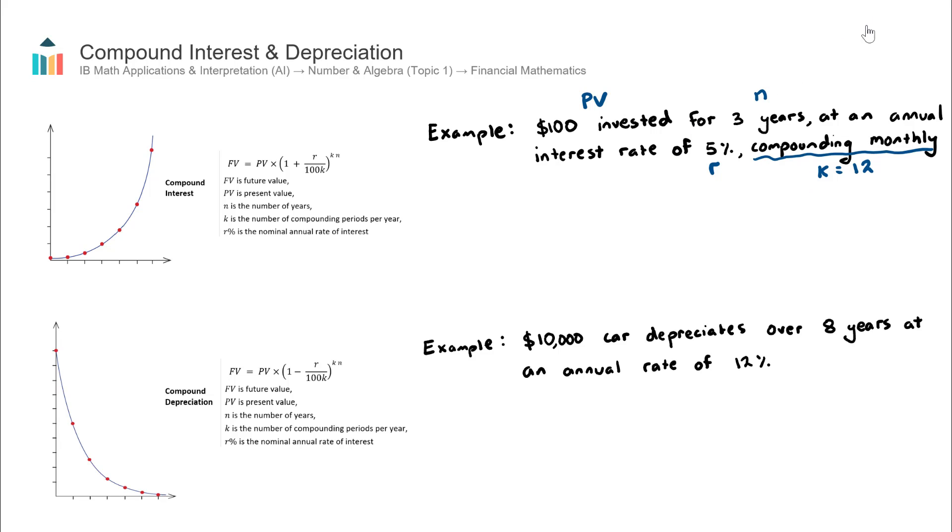My formula will be, and I'm looking at my formula here, my future value, that's the value in the future after the 3 years, will be the present value, which is 100, multiplied by 1 plus my interest rate. So it's going to be my interest rate over 100 times K. My interest rate is 5 divided by 100 multiplied by 12, because my K value is 12, all to the power of K times N. So that'll be 12 times 3.